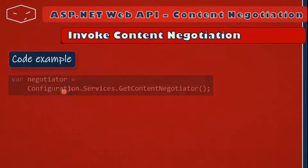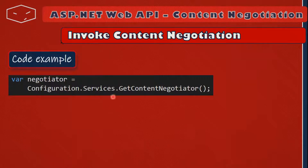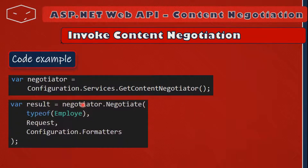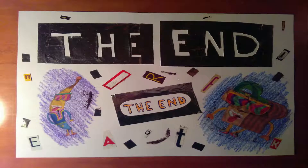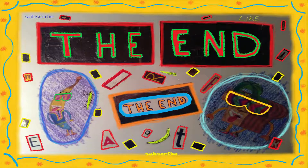In our code example, we got the negotiator from Configuration.Services.GetContentNegotiator(). After that, we called the Negotiate method passing the type of object to serialize, the HTTP request, and the Configuration.Formatters. Then we returned a new HttpResponseMessage where the content is a new ObjectContent with the object to serialize, the formatter from the result, and the media type from the result. This is the end — thank you for watching.